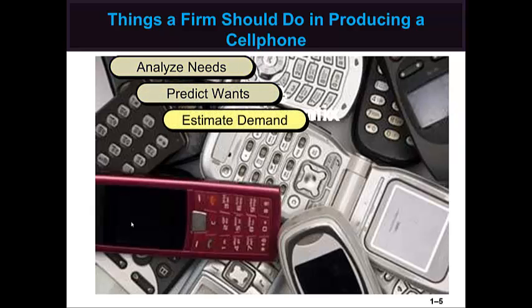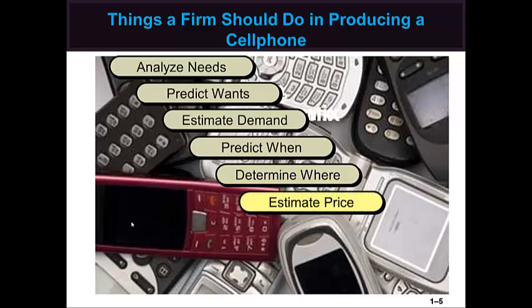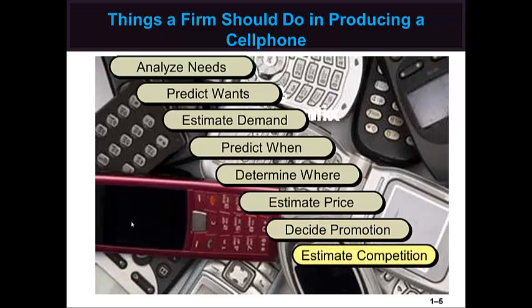After all, production can make however many types and styles of phones it wants to, but if the phones do not meet the consumer's needs, then the company is going to go out of business. So the relationship between marketing and production should be very close. These are all the different functions that marketing performs.